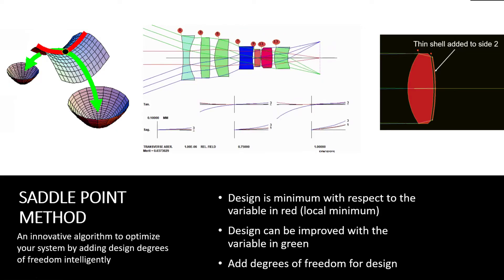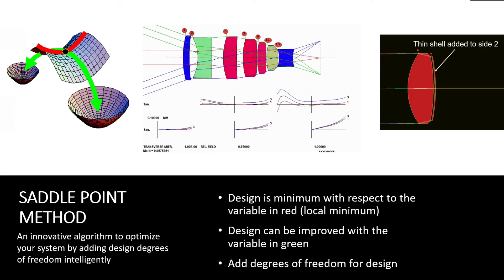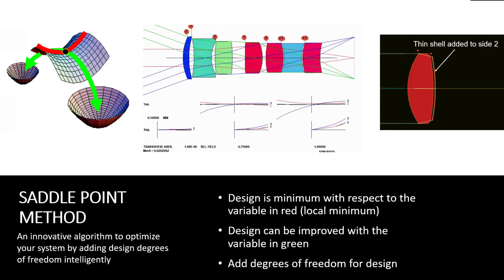The second category of automatic design tools is based on the saddle point method. You can use this method to build a complete system without a starting point.